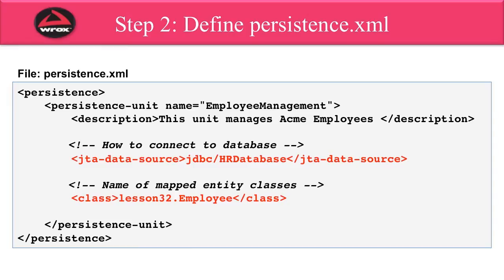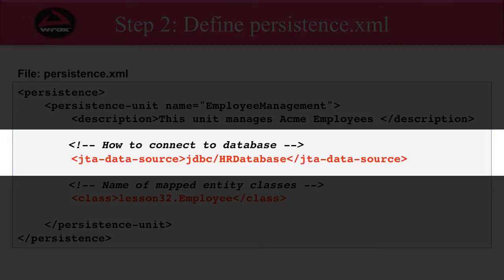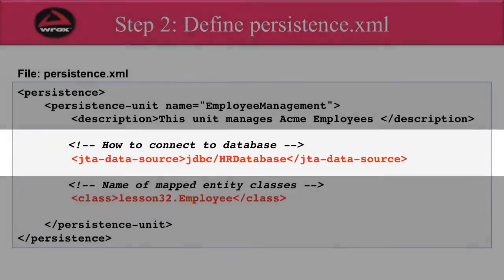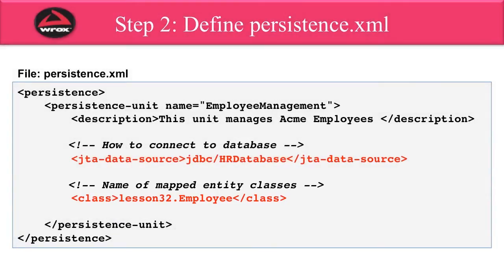In the previous step, we mapped our Java class to a database table. In this next step, we need to define a Persistence XML. This file will basically tell the system how to connect to your database and also which classes to map. Here, I tell the system how to connect to the database using the JTA data source, giving the actual JNDI name of the database. Then I give a list of the mapped classes — in this example, I only have one class: lesson32.Employee. If we had additional classes, we would simply repeat this line for each one of those mapped classes.